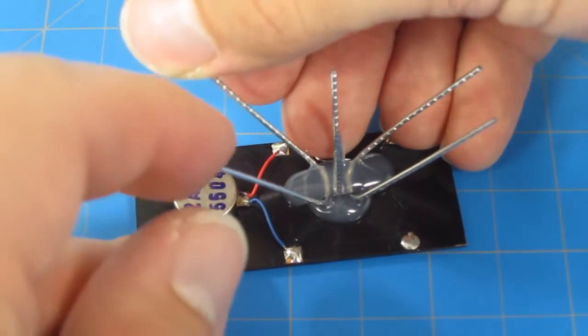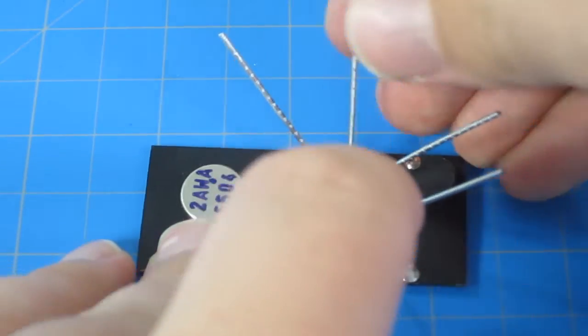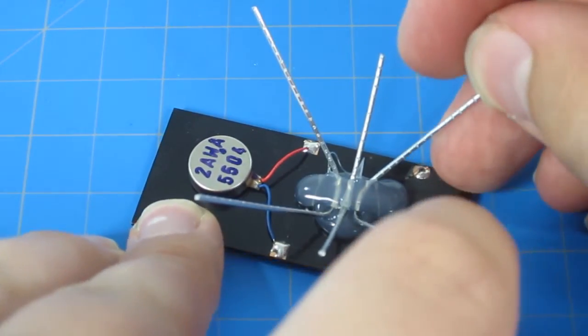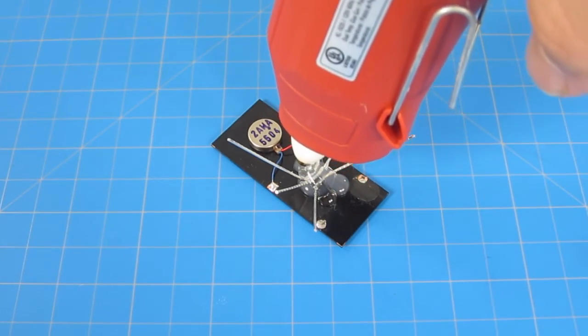Once your glue has completely hardened, expand the legs on your cockroach. Some people may find this easier to do before they begin their initial gluing. Finally, I added some extra glue just to make sure my legs were on nice and tight.